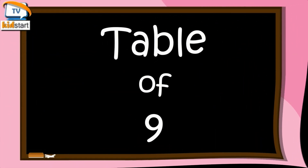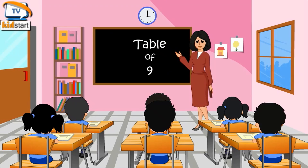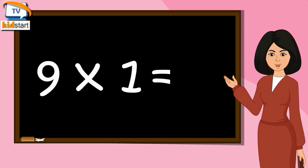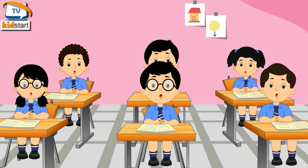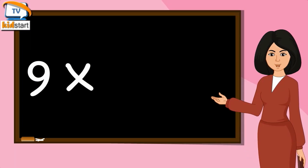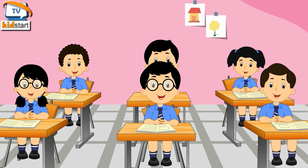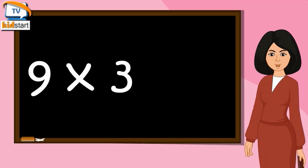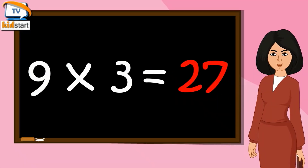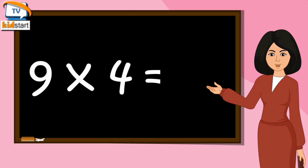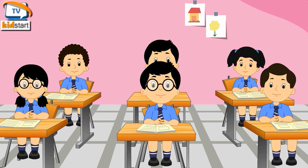Table of Nine. Nine ones are nine, nine twos are eighteen, nine threes are twenty-seven, nine fours are thirty-six.